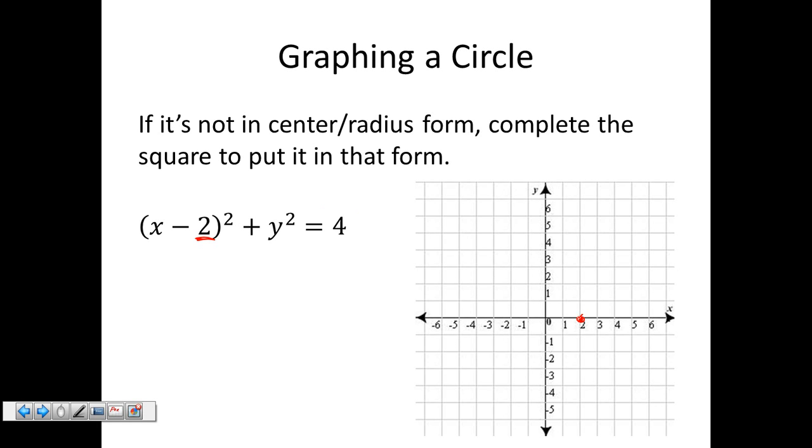This four is not my radius, it's my radius squared. That means my radius is two. With a center at two zero and radius of two, my farthest left point is at the origin, my farthest right point is at four, my farthest up point is two units above the center, and my farthest down point is two units below. Then I draw my circle connecting those four points.